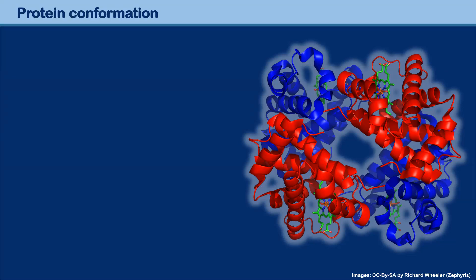The picture that you see over here is hemoglobin. That's the red pigment in our red blood cells which carries oxygen. And it is a protein. This slide is going to be about protein conformation — an important word to know. Conformation is nothing more than the three-dimensional structure of a protein.